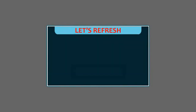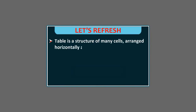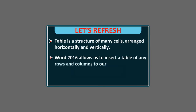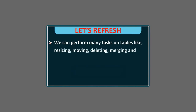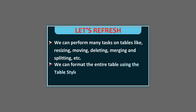Let's refresh. A table is a structure of many cells arranged horizontally and vertically. Word 2016 allows us to insert a table of any rows and columns into our text document. We can enter any data in one cell. We can perform many tasks on tables like resizing, moving, deleting, merging, and splitting. We can format the entire table using the Table Styles feature present in the Design tab.